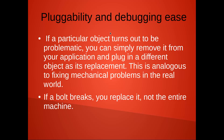Pluggability and debugging — if a particular object turns out to be problematic, you can simply remove it from your application and plug in a different object as a replacement. This is analogous to fixing a mechanical problem in the real world. If a bolt breaks, you replace it — not the entire machine. This tells us that encapsulation is good because if one part is problematic you can simply replace it: plug it out and put in another.